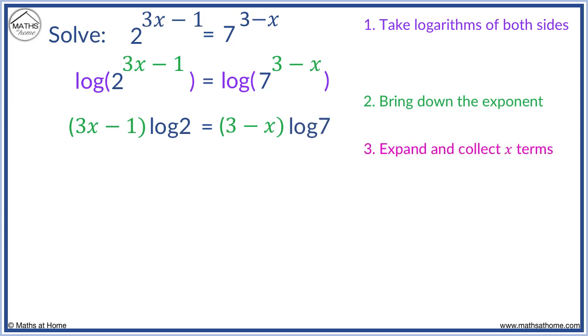Now we expand and collect x terms. We multiply 3x minus 1 by log 2. We get 3x log 2 minus log 2. On the right hand side we multiply 3 minus x by log 7. We get 3 log 7 minus x log 7.